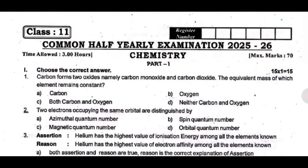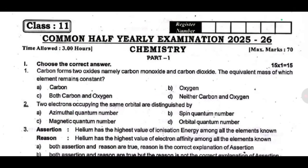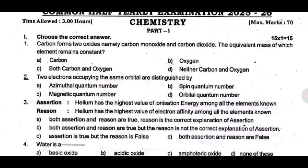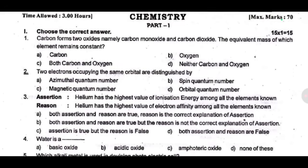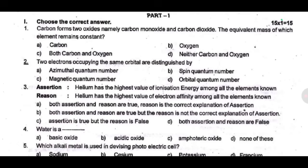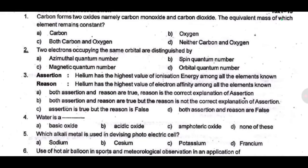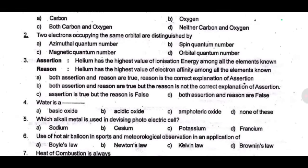Part one: First one — carbon forms two oxides, namely carbon monoxide and carbon dioxide; the equivalent mass of which elements remains constant? Second one — two electrons occupy the same orbital and are distinguished by dash. Third one — reason: helium has the highest value of ionization energy among all the elements known as dash.